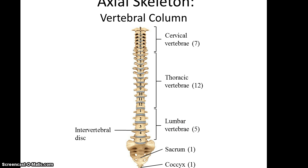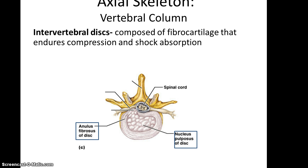The vertebral column consists of seven cervical vertebrae, twelve thoracic vertebrae, five lumbar vertebrae, one sacrum, and one coccyx, with intervertebral discs located between the vertebrae. The intervertebral discs are composed of fibrocartilage, and that allows them to endure compression and shock absorption, so you can sit down really hard and not have all your bones click together. The disc has a fibrous outer layer and a nucleus that's more pulpy in the middle.